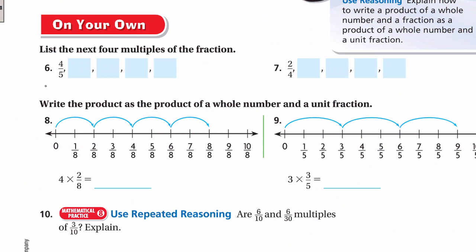For the on-your-own questions: list the next four multiples of 4/5 and 2/4, write 4 × 2/8 as a whole number multiplied by a unit fraction, and write 3 × 3/5 as a whole number multiplied by a unit fraction. You will solve these and we will go over them together in the live session. Hope you guys enjoyed this lesson — have a nice day, bye bye!